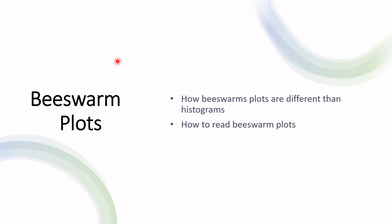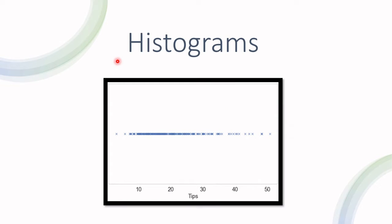We have various bills and for each bill we have the corresponding tip. If we try to plot the values we get something like this. Each X here represents a different tip.